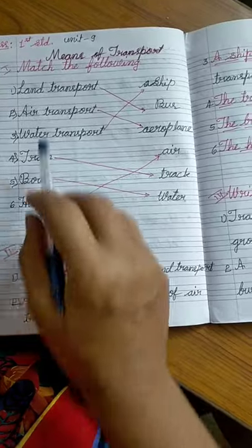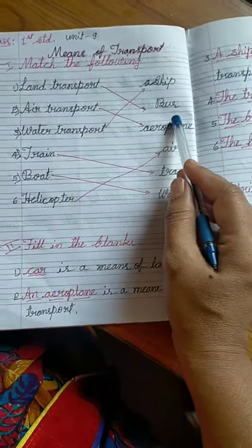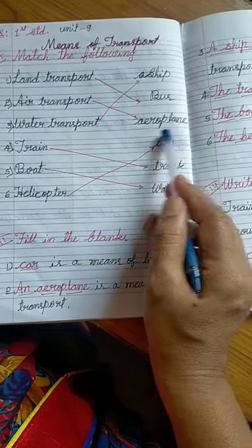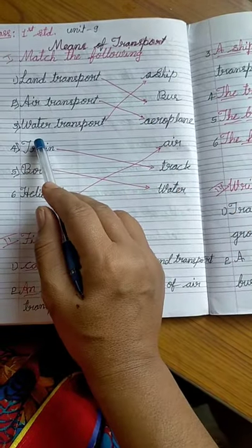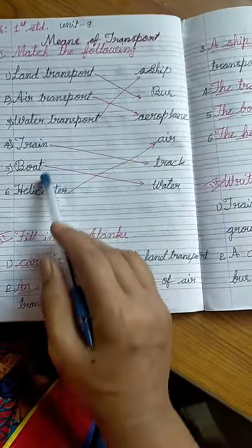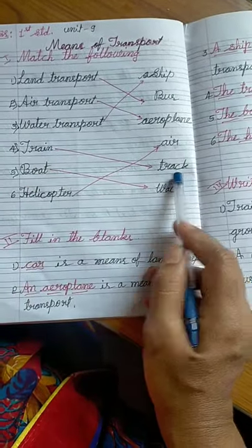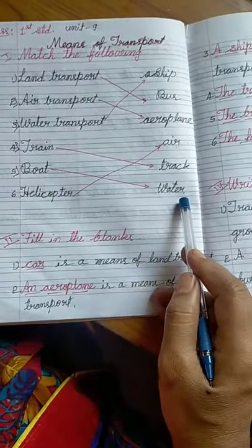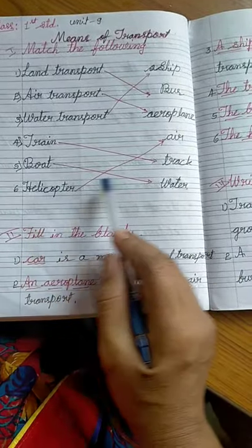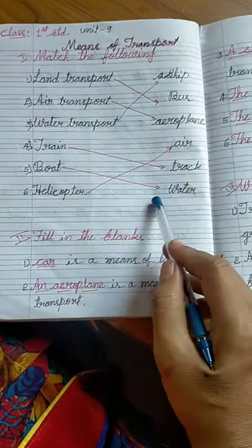Once again: land transport - for example, bus. Air transport - for example, aeroplane. Water transport - for example, ship. Train runs on track. Boat slides on water. Helicopter flies on air. This completes the match the following activity.